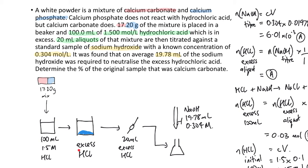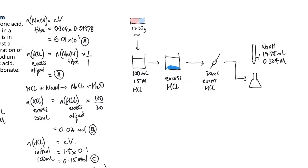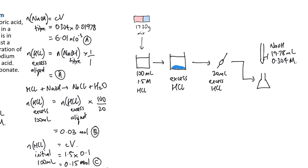At the end of that reaction the calcium phosphate hasn't reacted, but the calcium carbonate has, and now there's some excess HCl left over. Then 20 ml aliquots of that mixture are titrated against standard sodium hydroxide of known concentration. We take a 20 ml aliquot of the excess, put it in the conical flask, and titrate it against the known sodium hydroxide. The goal is to work out the original sample's percentage of calcium carbonate. Following the diagram, our starting point is the known, and we work backwards through each step to get back to the answer.